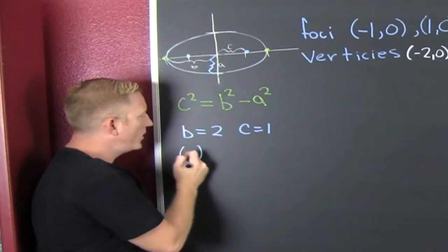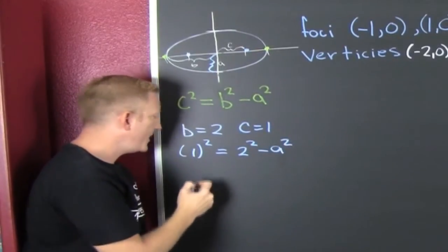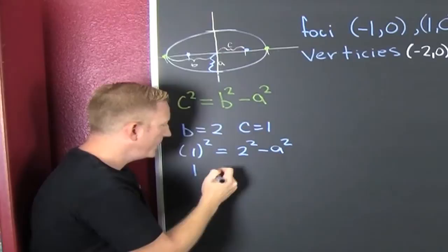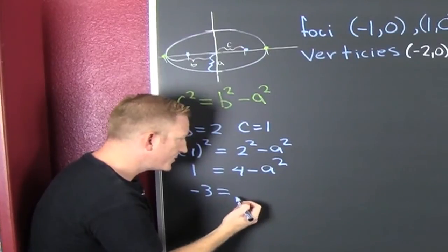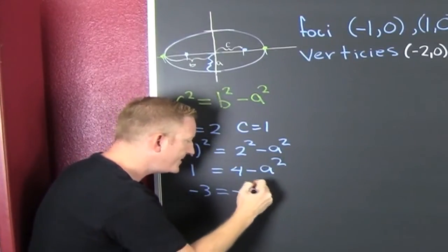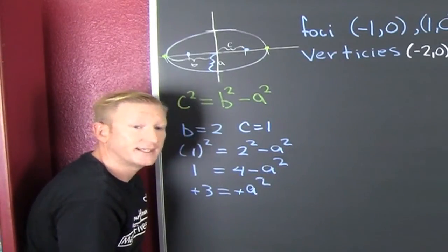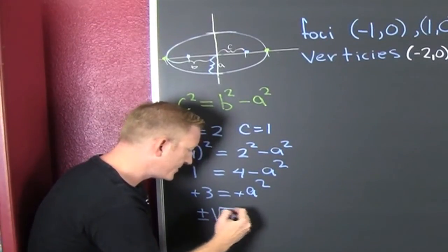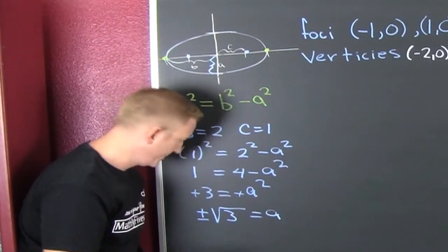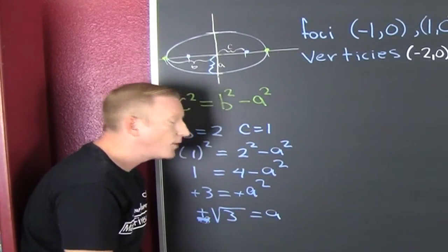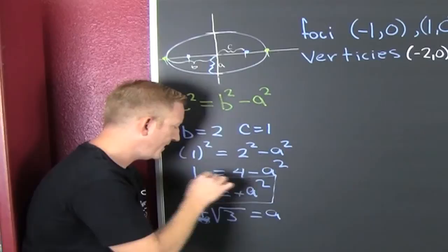So then: 1 squared is going to equal 2 squared minus a squared. So 1 equals 4 minus a squared. So a squared equals 3. I take the square root of both sides — plus or minus square root of 3. But we're talking about a distance, so I disregard the negative. So a is the square root of 3, and more importantly, a squared is 3.